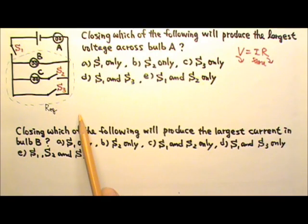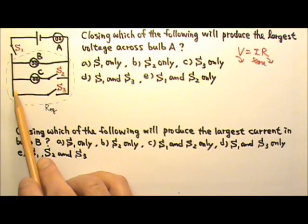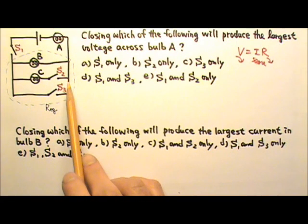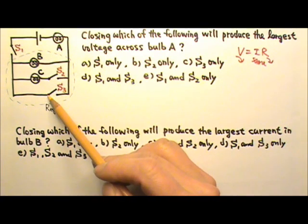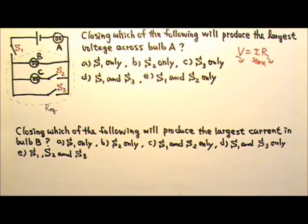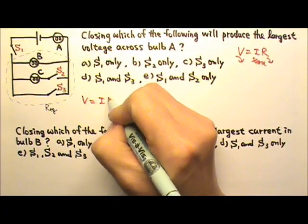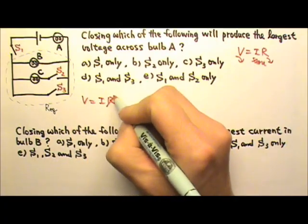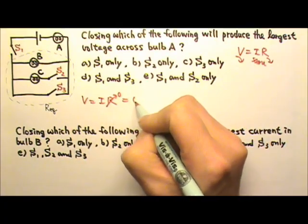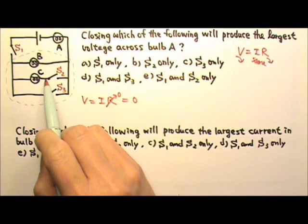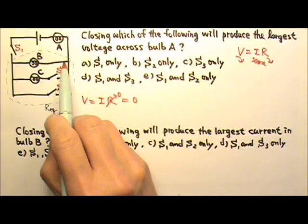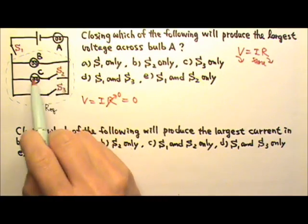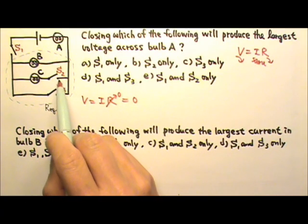Another way to look at this is, closing S3 would have zero resistance over here, and since these three segments are in parallel, they all get the same voltage. And V equals IR. For this segment, there is no resistance. Therefore, there is no voltage. So the other two segments have to get zero voltage also. And that means the zero volts will give bulb B zero current, and bulb C also zero current.